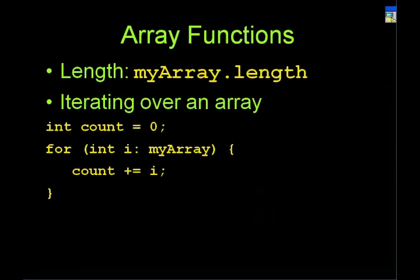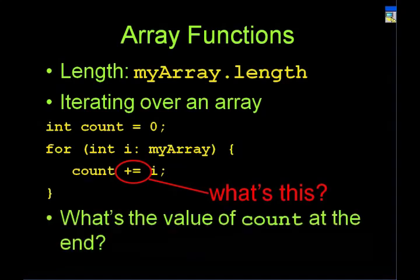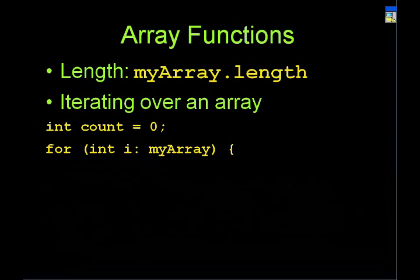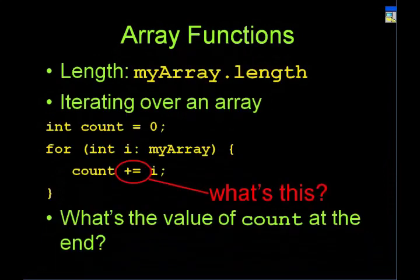Here's how you could iterate through an array: 'count = 0', then for each integer i in myArray, increment count by i using 'count += i'. What's the value of count? Six — because the values are 1, 2, and 3, and 1 + 2 + 3 = 6. That's kind of it for the basics of Java.